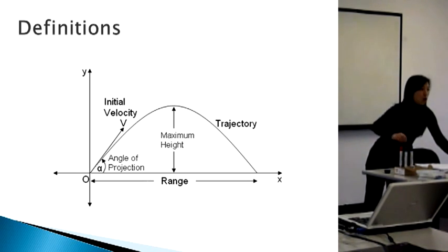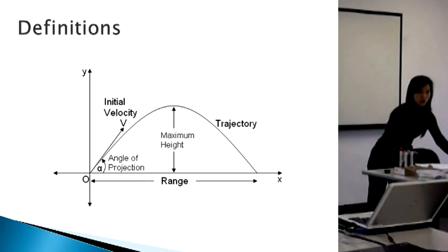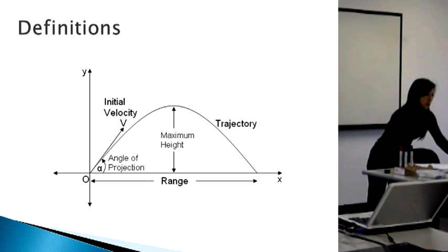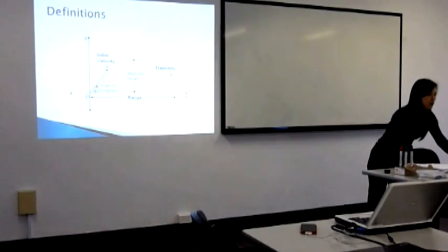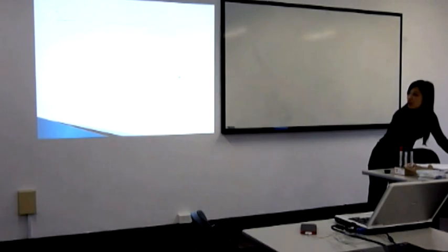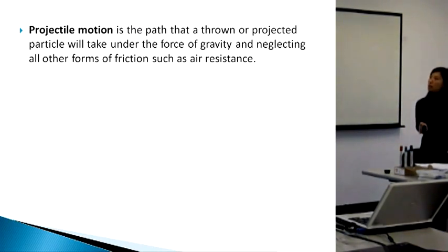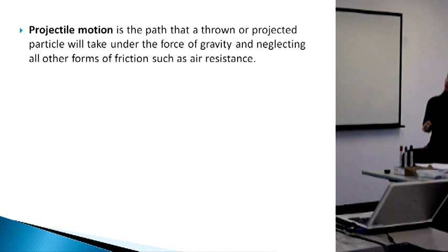When you project something or throw something, you will have to have an initial velocity — otherwise it just won't move. When you throw it, it reaches a maximum height and then eventually it drops back down. The range is the distance from the starting point to the ending point. The trajectory is the path — the equation of the path. The projectile motion is the path that a projectile particle will take under the force of gravity, ignoring air resistance.